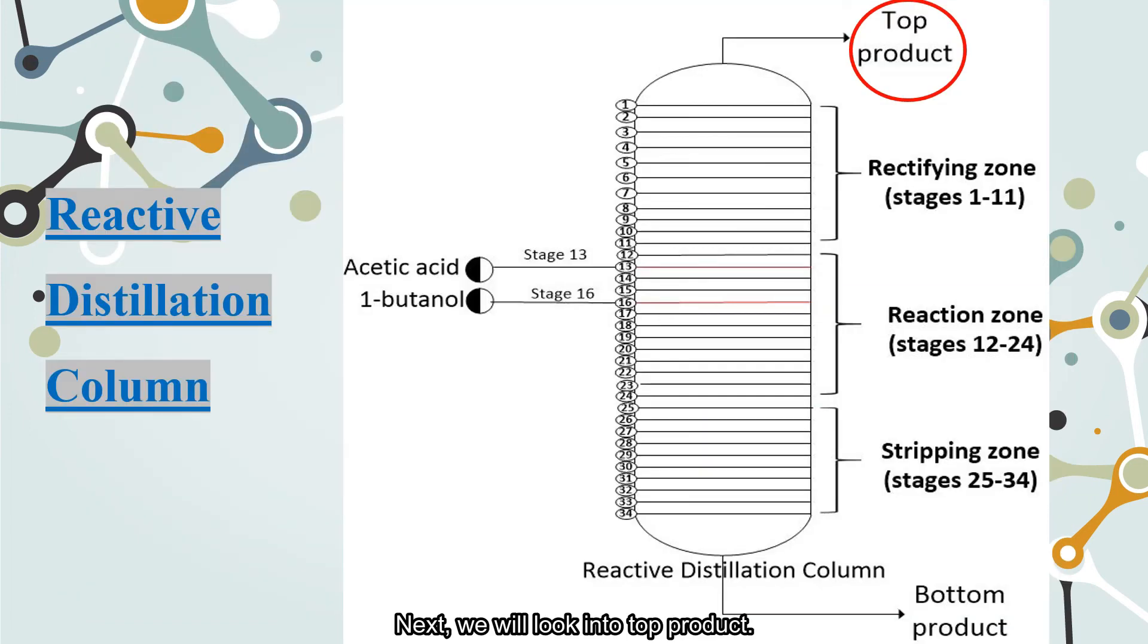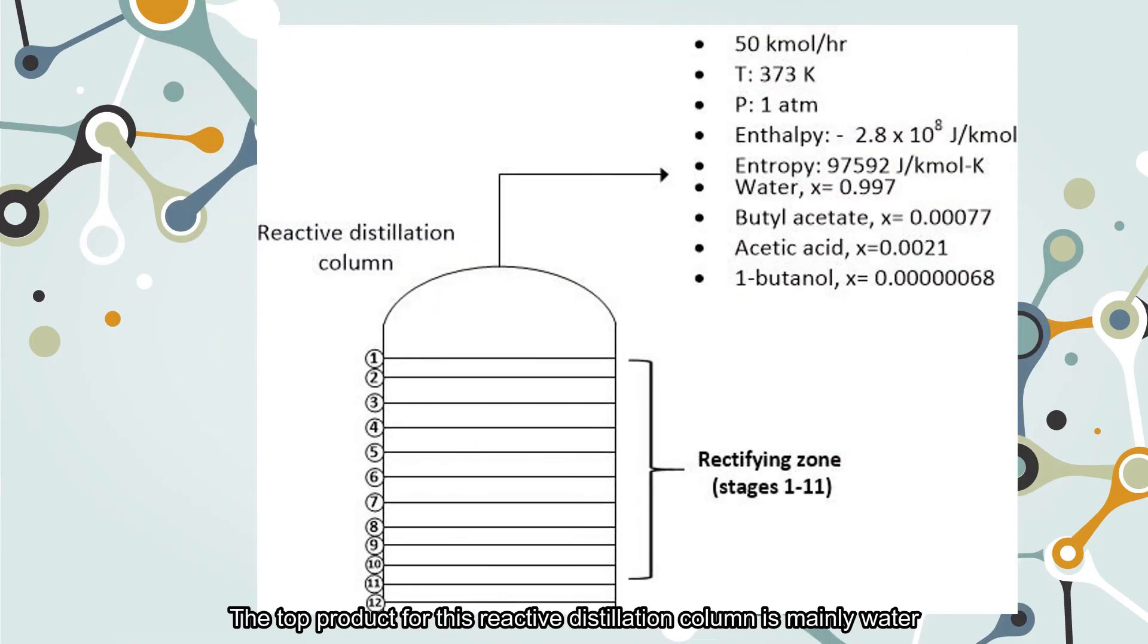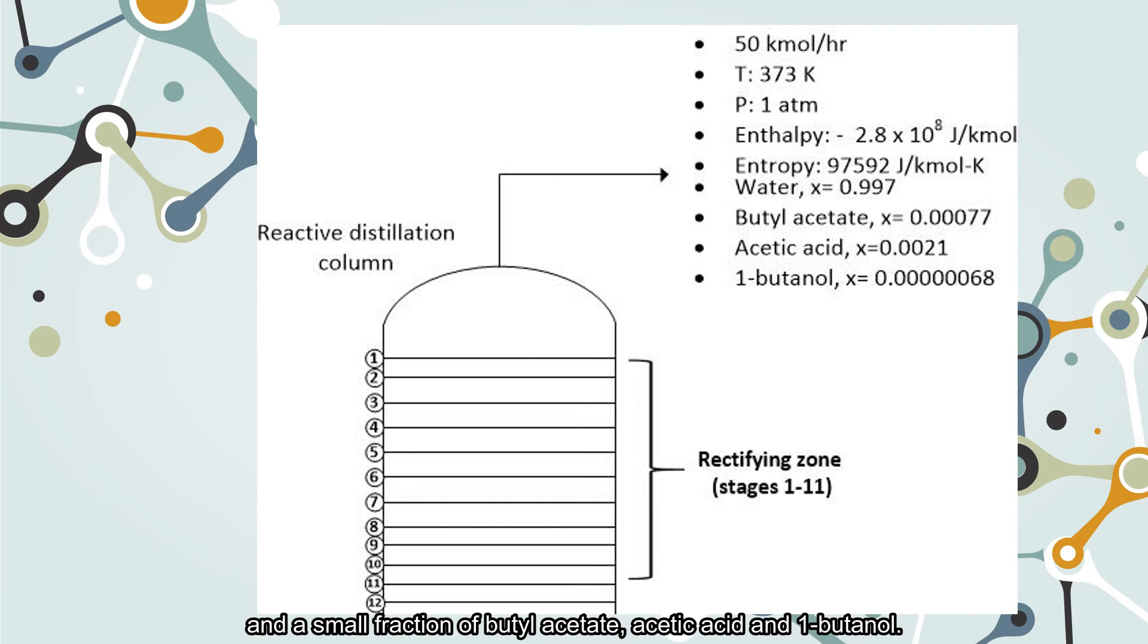Next, we will look into the top product. The top product for this reactive distillation column is mainly water and a small fraction of butyl acetate, acetic acid, and 1-butanol. The enthalpy and entropy values for top products are as stated here. Negative enthalpy means that the reactions are exothermic reactions.